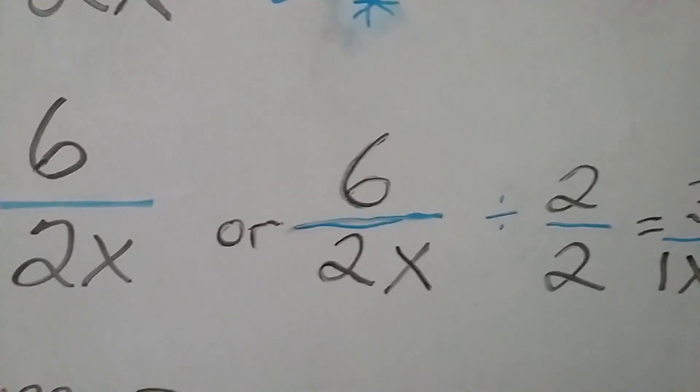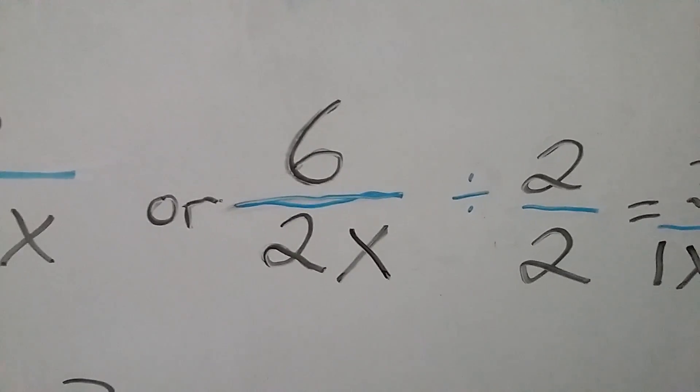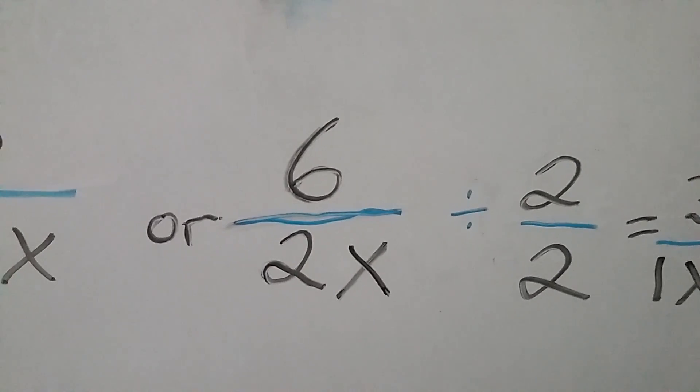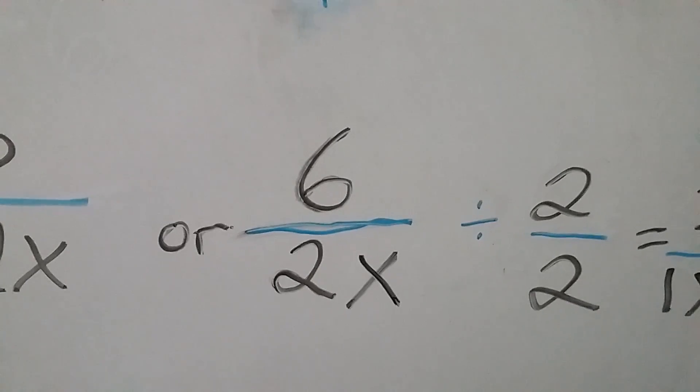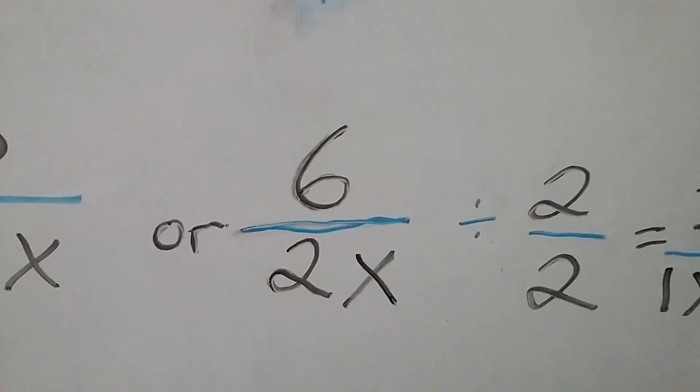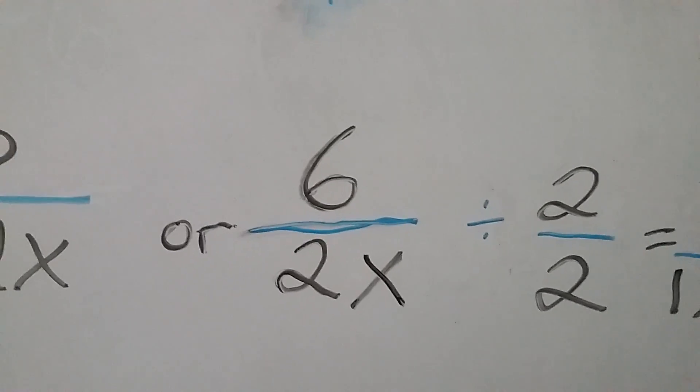Now, next step we can do is we can take that 6 divided by 2x and we can divide it by 2 over 2, or the fraction 2 halves, or the easiest way to say it is 2 over 2.